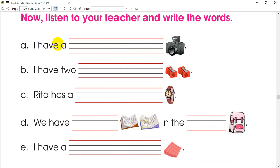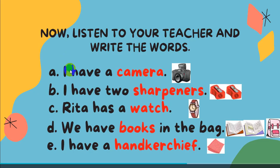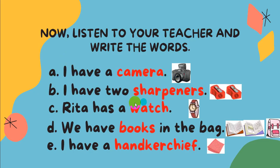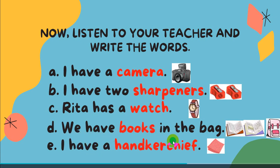I have a camera. I have two sharpeners. Rita has a watch and we have books in the bag. I have a handkerchief.